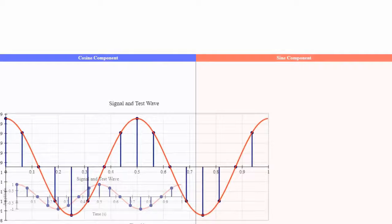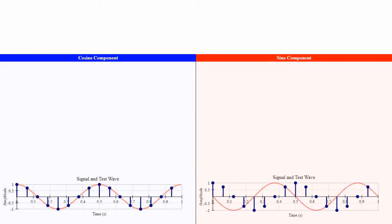So I have divided the screen in 2, with the left half of the screen showing the cosine component, and the right half of the screen showing the sine component. Testing the signal means that the DFT will multiply the signal by the test wave. Here is the result for each component.